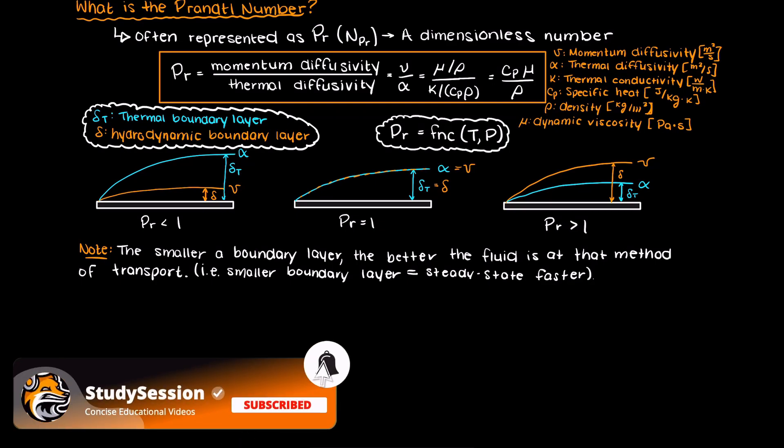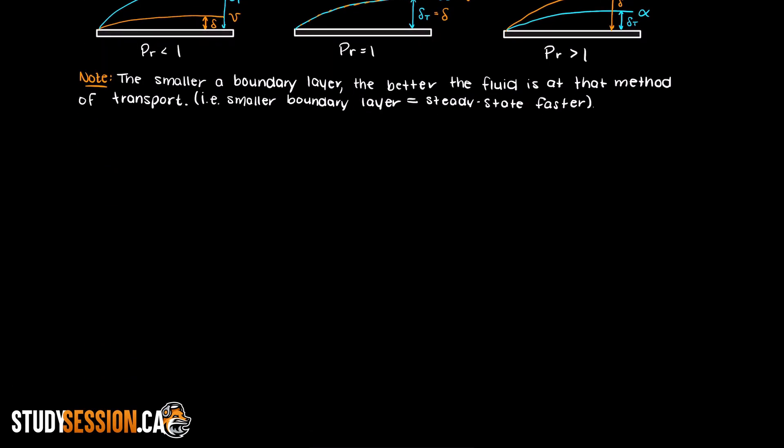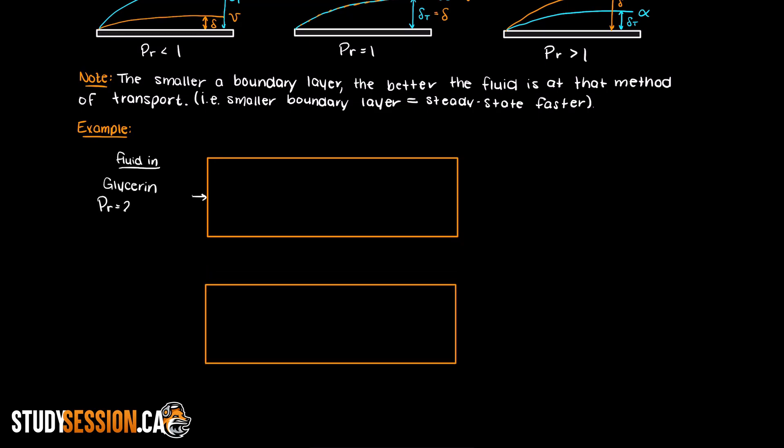To better understand what this actually means, let's take a practical example in which we use the Prandtl number. Let's imagine two scenarios. Firstly, we have glycerin with a Prandtl number of 2455 flowing through a heated cylinder.